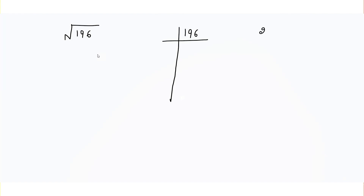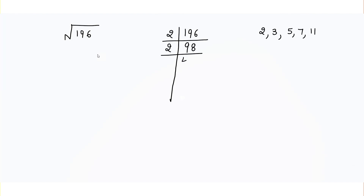For example: 2, 3, 5, 7, and 11. Here in this question you can see that 196 is divisible by 2. If I divide it by 2, I will get 98. Now again we have to see that 98 is divisible by which prime number — it is divisible by 2, so I will get 49.